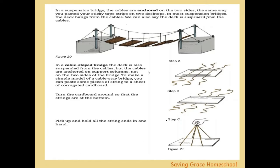The cable-stayed bridge is a second type working on a similar principle. To build a model, take a piece of cardboard, run three lengths of string across it, and use sticky tape to fix these to the underside. Then flip it around and pull the strings up to a central point at the top, as in figure 21. Now you have a cable-stayed bridge with a single support holding up the bridge, with cables doing the supporting.